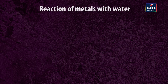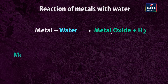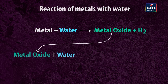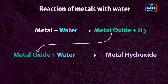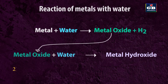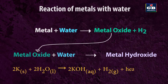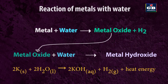Reaction of metals with water: Metals react with water and produce metal oxide and hydrogen. This metal oxide further dissolves in water to produce metal hydroxide. Metal + water → metal oxide + hydrogen; metal oxide + water → metal hydroxide. For example: 2K + 2H₂O → 2KOH + H₂ + heat energy.